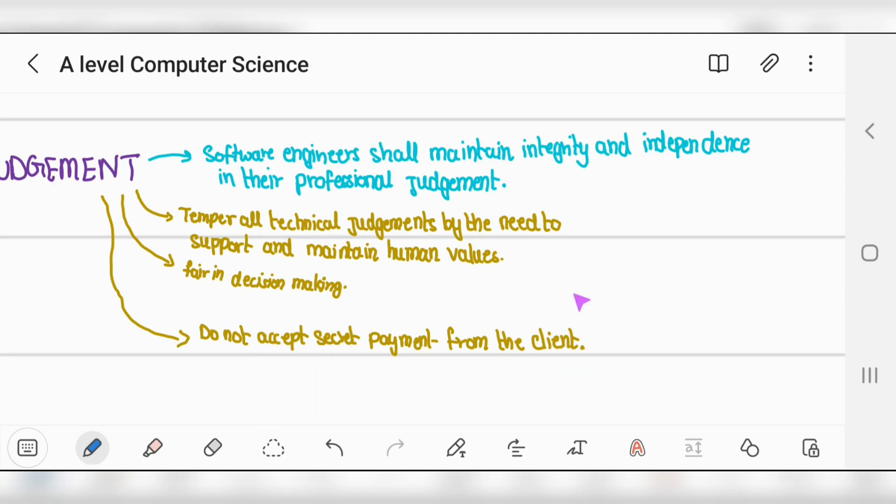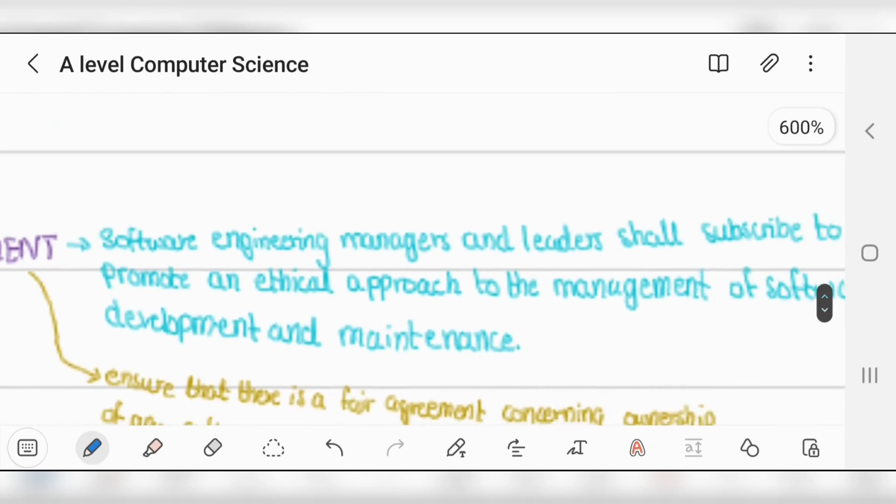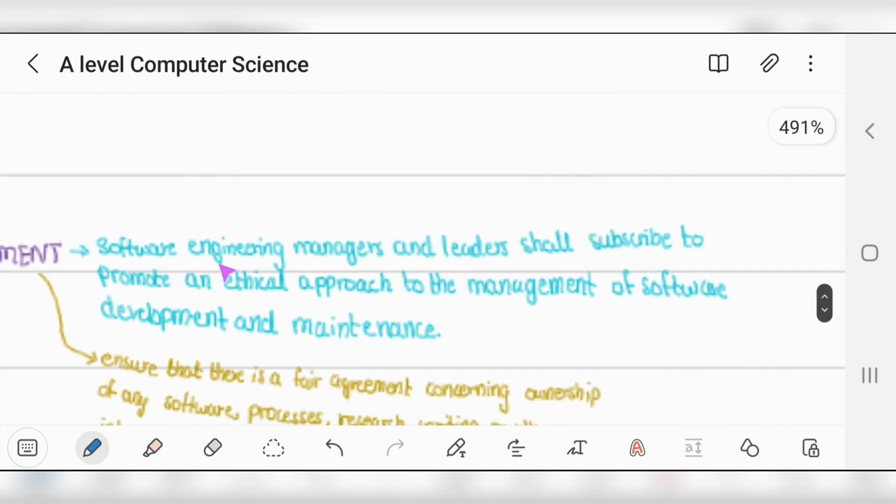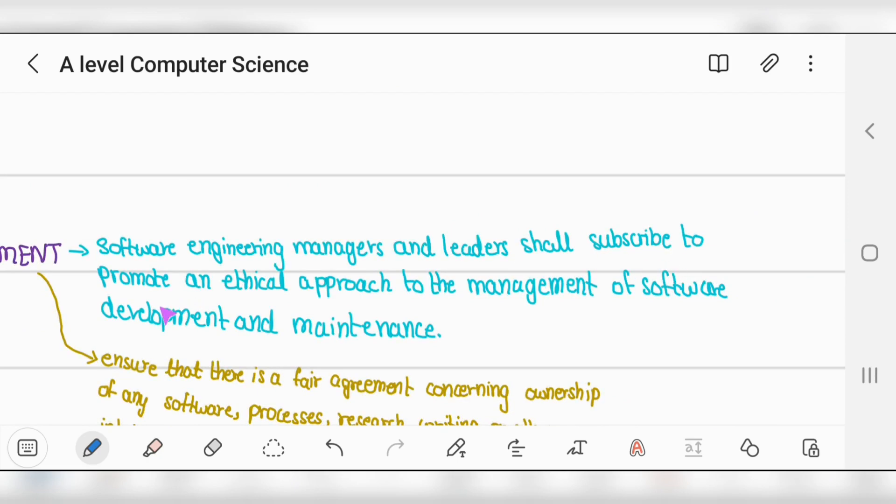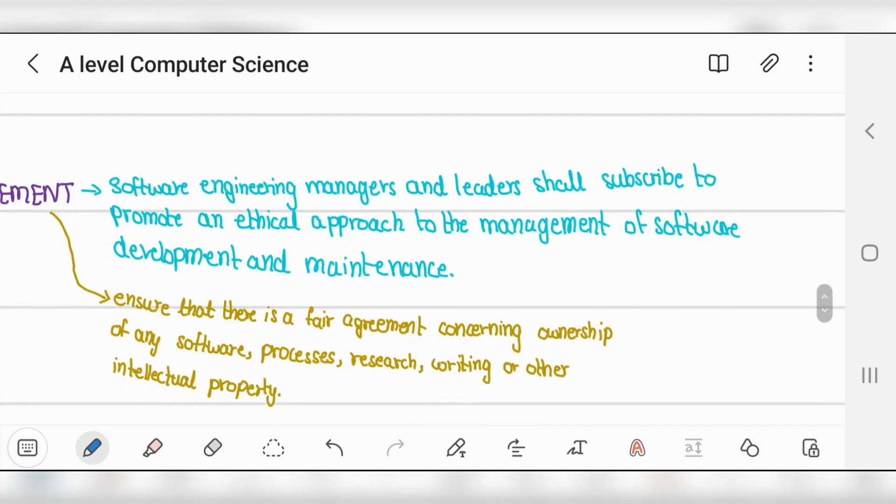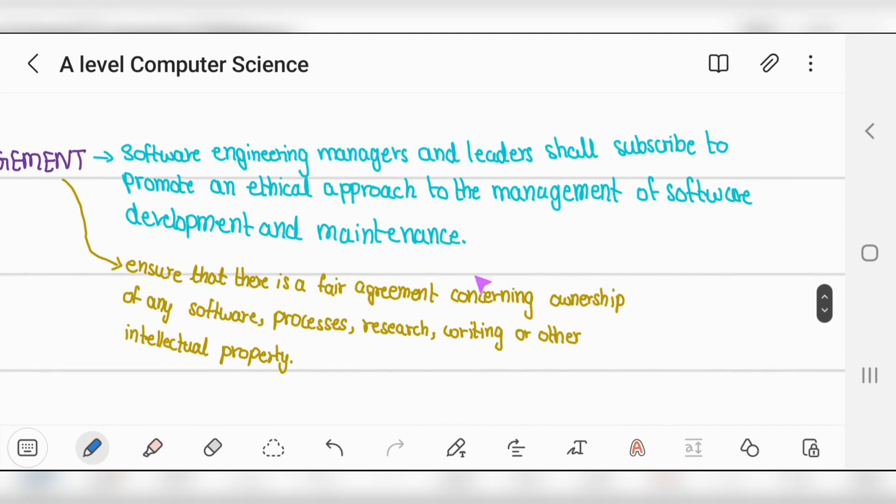Number five, management: software engineering managers and leaders shall subscribe to and promote an ethical approach to management of software development and maintenance, ensuring fair agreement concerning ownership of intellectual property.